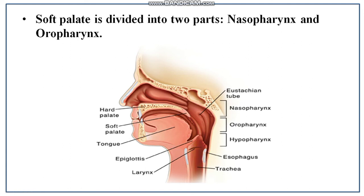Today we discussed the basic components of food, the basic structure of the alimentary canal, parts of the buccopharyngeal chamber, and the oral cavity including the palate. In our next video we will start with the tongue and teeth of the oral cavity. If you are new to my channel, please like, share, and subscribe so you do not miss any updates.